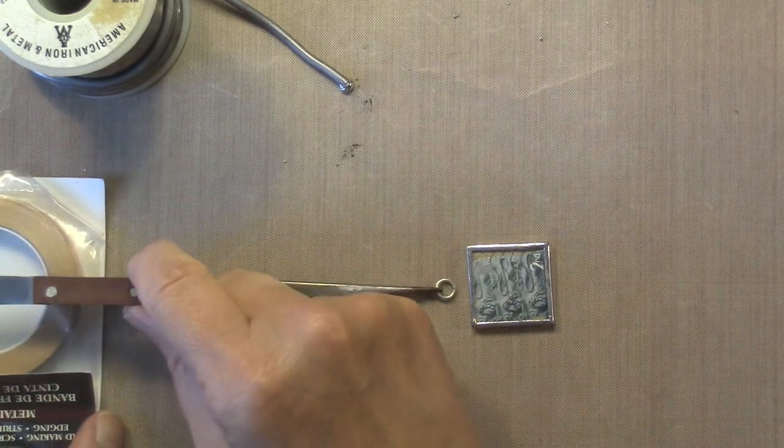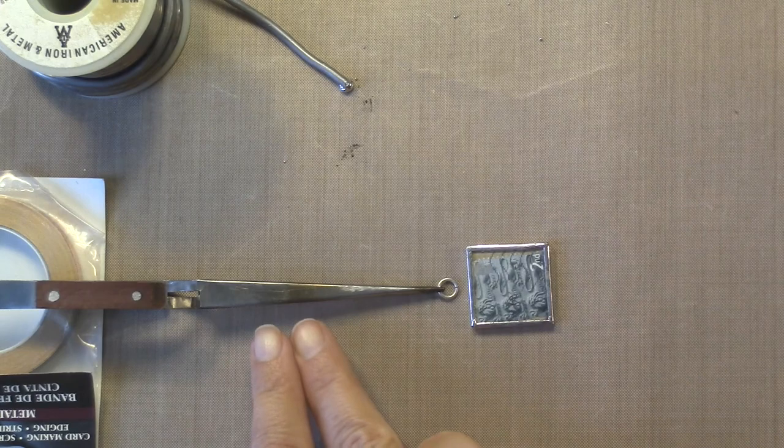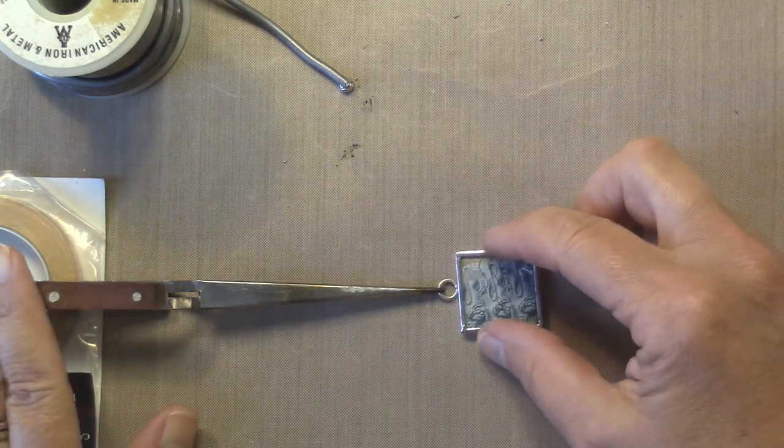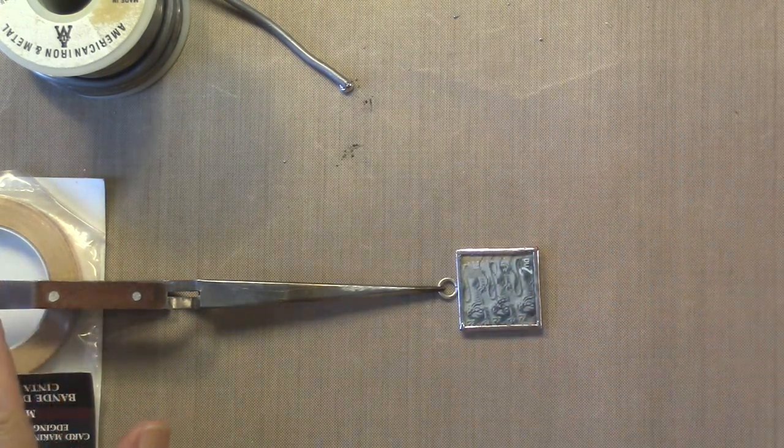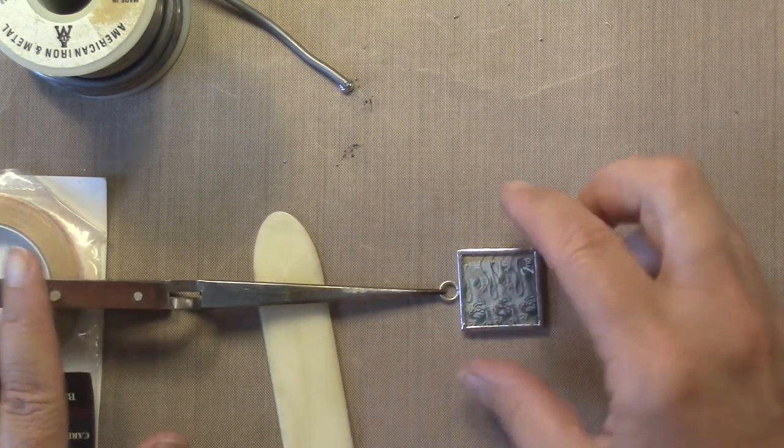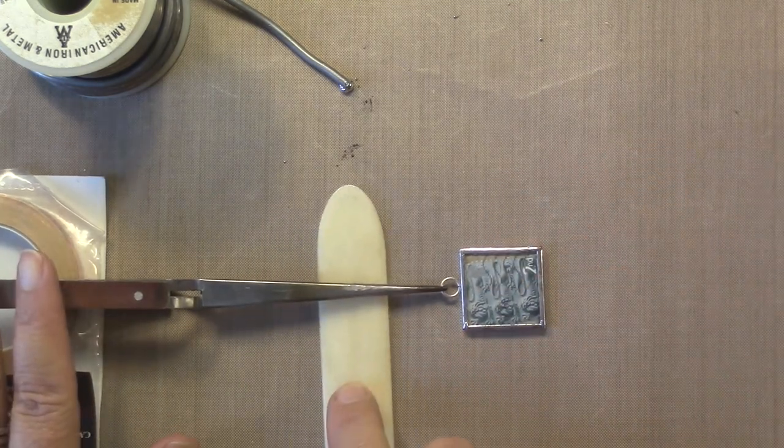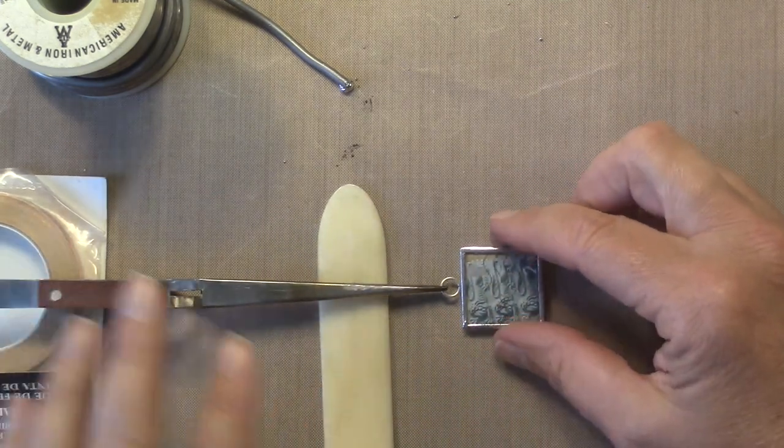What I like to do is make a little bit of a prop to hold this exactly where I want it, and I'm using that tweezer that I showed you in the beginning. So that's going to be exactly where I want it.